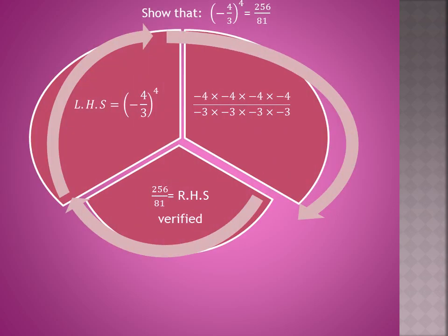In this question, we have to verify minus 4 upon 3 to the power 4 is equal to 256 upon 81. There are two sides, left hand side and right hand side.